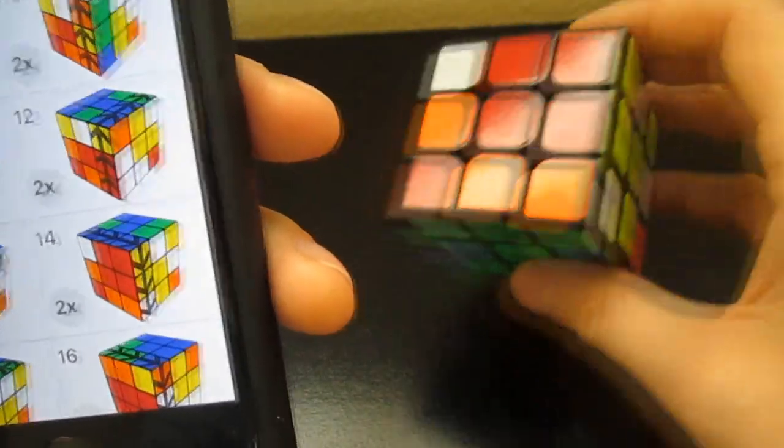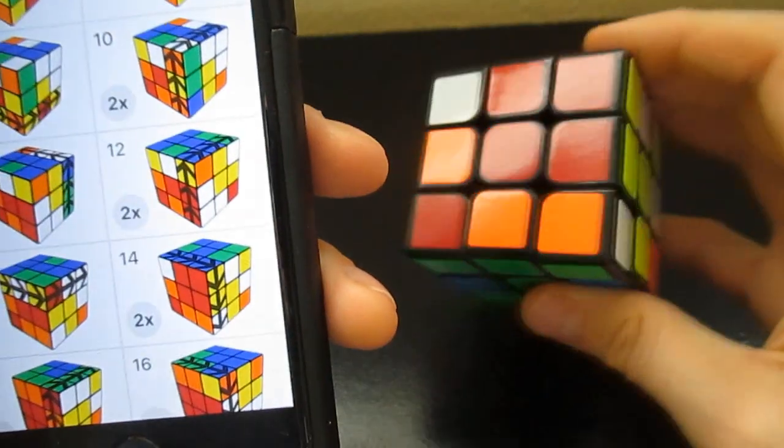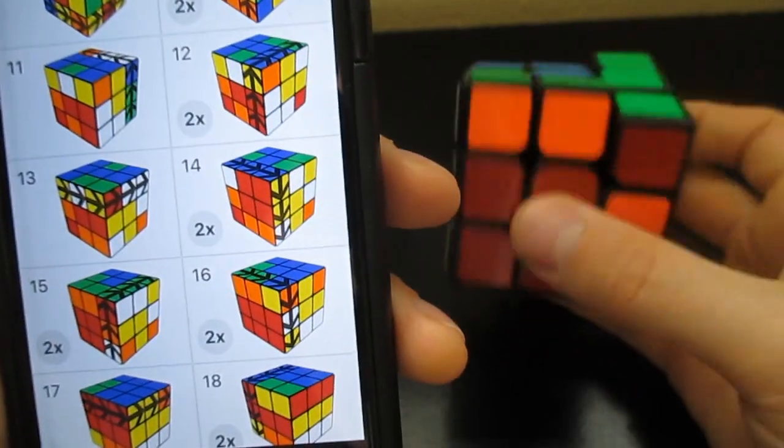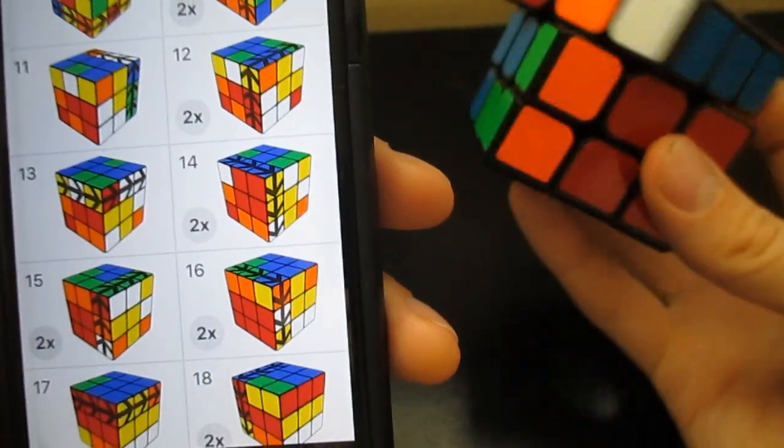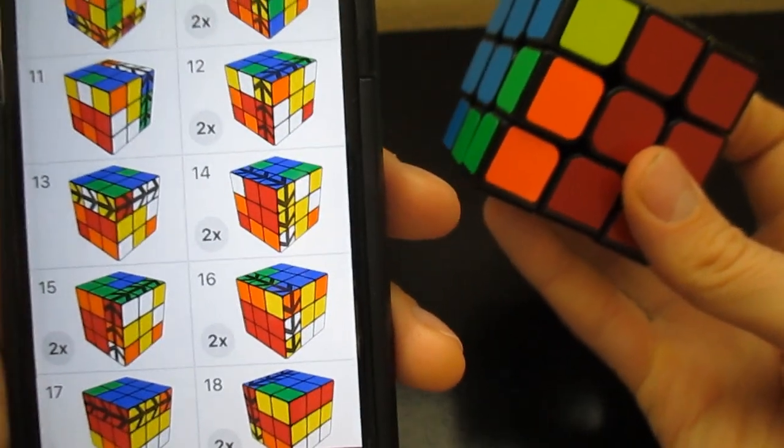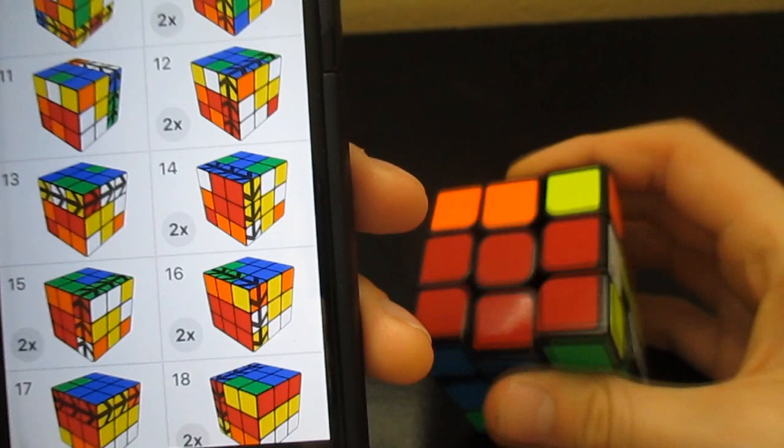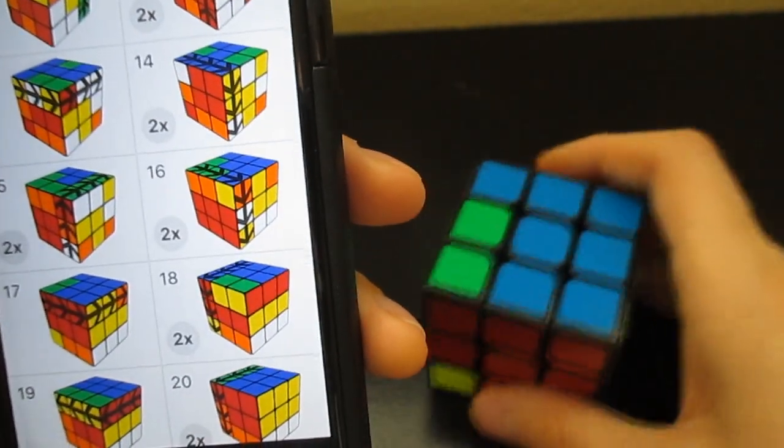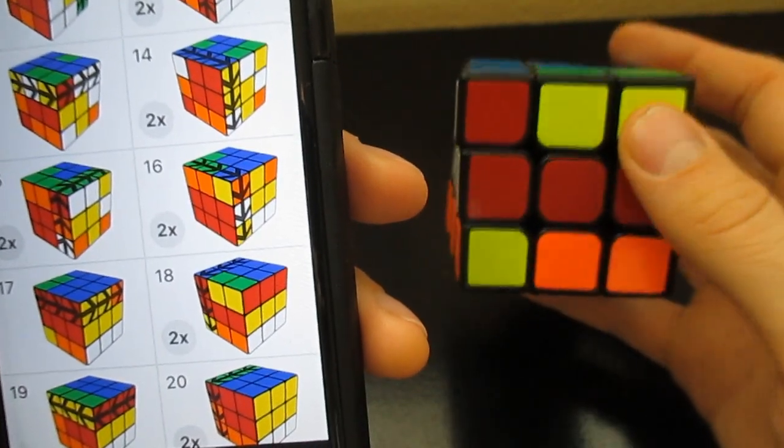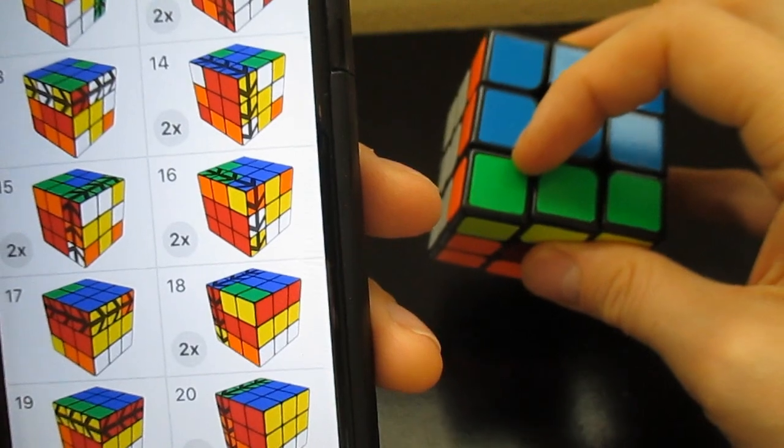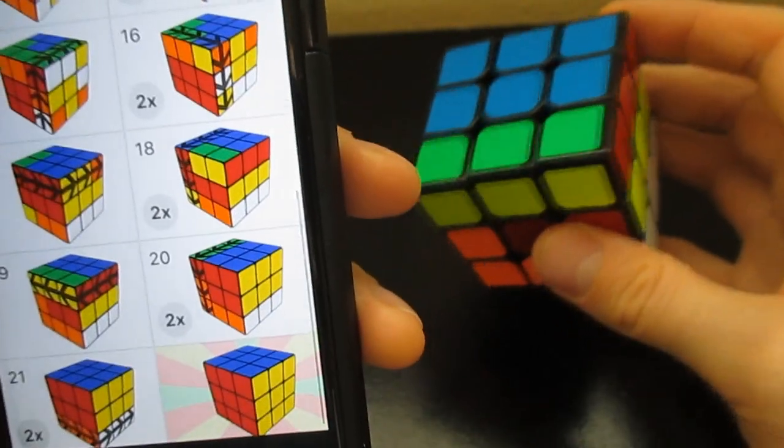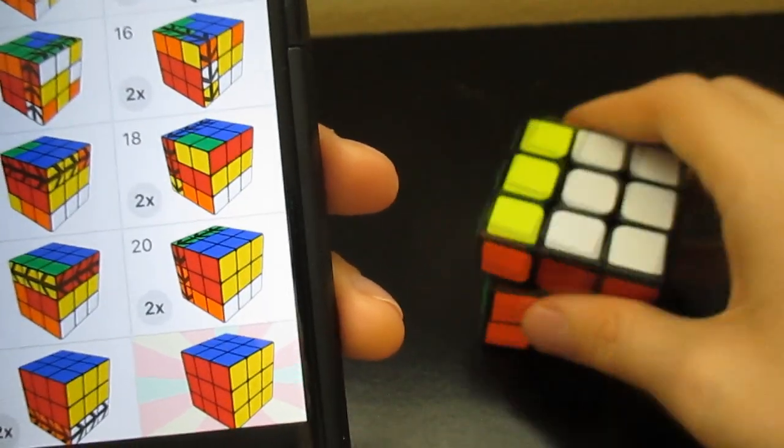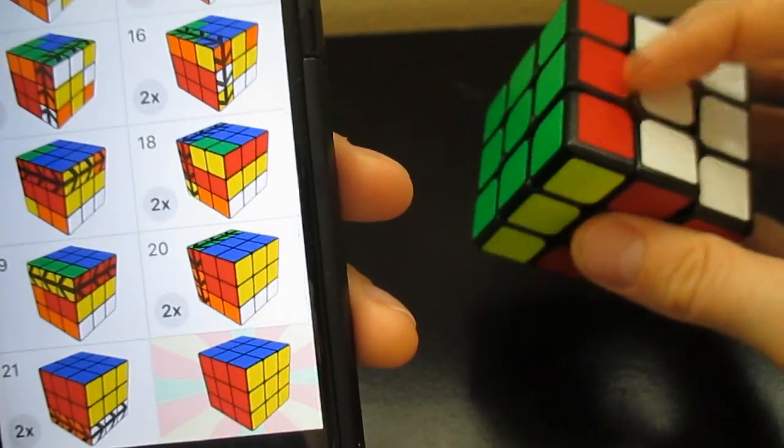Number 10 goes twice, one two. Number 11 is back once. Number 12, one two. Number 13 like that. 14 front face twice. 15, one two. 16, one two. 17. 18 one two. 19. 20 one two. And boom!